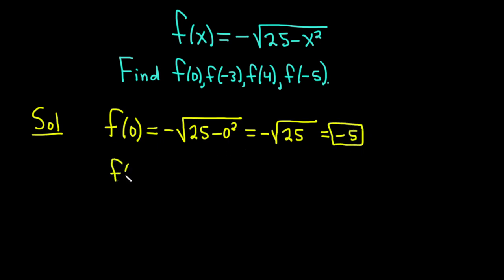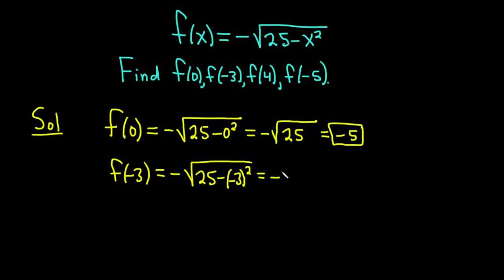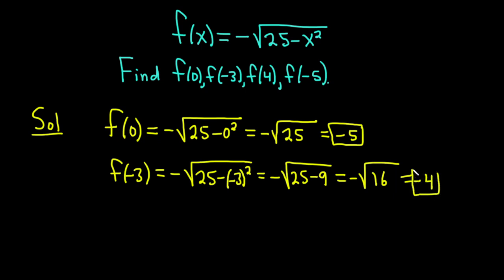Let's look at f of negative 3. Again, we replace all of the x's with negative 3. There's only one x, so it's minus the square root of 25 minus, and then in parentheses, negative 3 squared. Negative 3 squared is positive 9, so this is going to be 25 minus 9, which equals minus the square root of 16. The square root of 16 is 4, so we just get negative 4. So f of negative 3 is equal to negative 4.